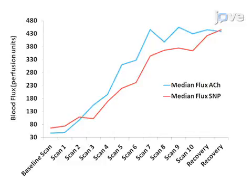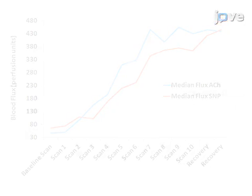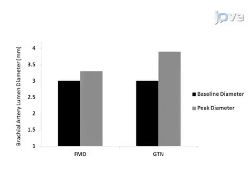Laser Doppler imaging with iontophoresis was used on a healthy, middle-aged woman without cardiovascular disease. There was a marked increase in median blood flux with both stimuli. Peak blood flux reached 455 perfusion units for acetylcholine and 446 perfusion units for sodium nitroprusside. Flow-mediated dilation and glyceryl trinitrate-mediated dilation were both investigated in a healthy young woman free of cardiovascular disease. The flow-mediated dilation test increased artery diameter by about 10% and the glyceryl trinitrate-mediated dilation increased artery diameter by about 30%.